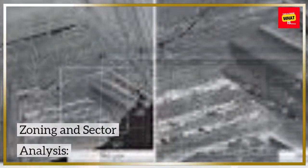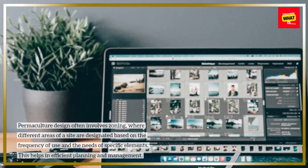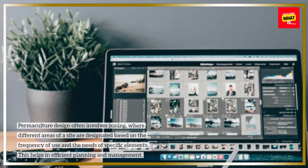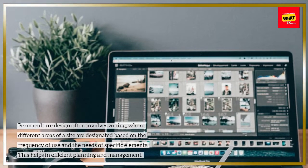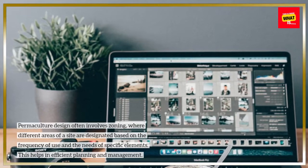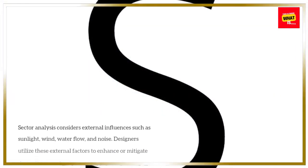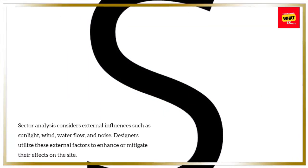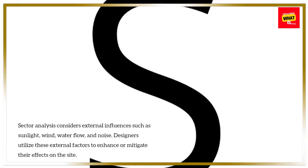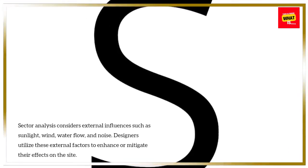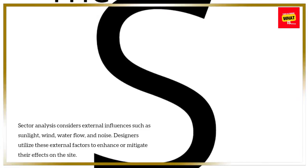Zoning and Sector Analysis: Permaculture design often involves zoning, where different areas of a site are designated based on the frequency of use and the needs of specific elements. This helps in efficient planning and management. Sector analysis considers external influences such as sunlight, wind, water flow, and noise. Designers utilize these external factors to enhance or mitigate their effects on the site.